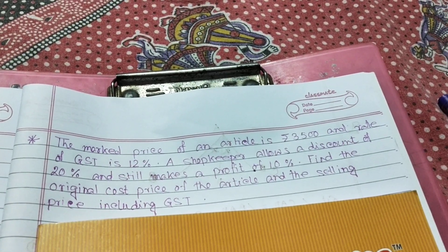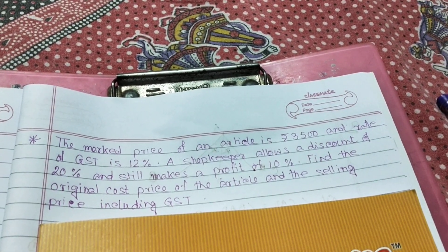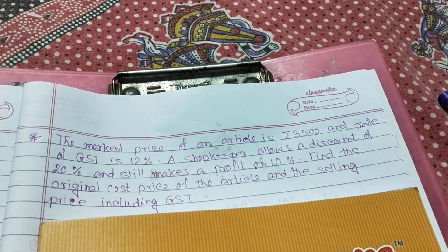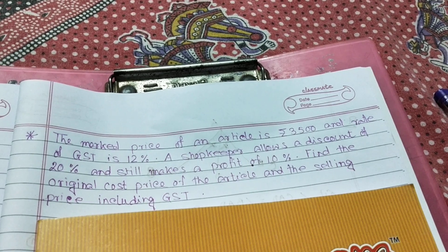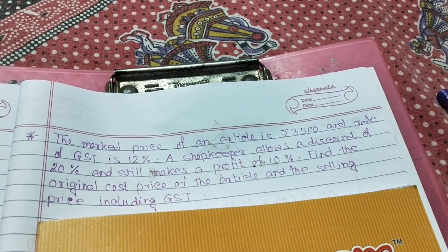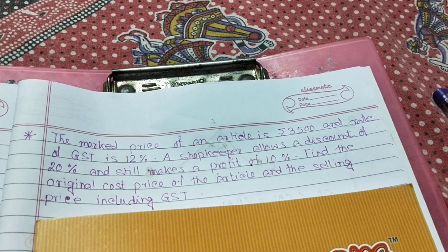The mark price of an article is Rs 3500 and rate of GST is 12%. A shopkeeper allows a discount of 20% and still makes a profit of 10%. Find the original cost price of the article and the selling price including GST.